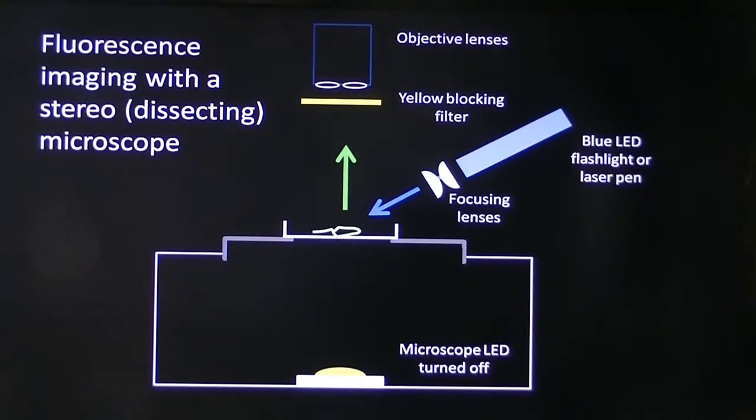With a dissecting microscope there's plenty of room to mount the yellow filter. With compound microscopes, depending on the design, the filter can either be inserted in the body of the microscope or maybe cut from a piece of celluloid and rested in the eyepieces.